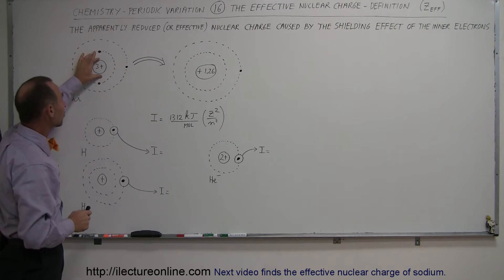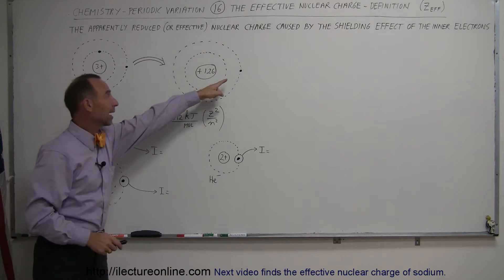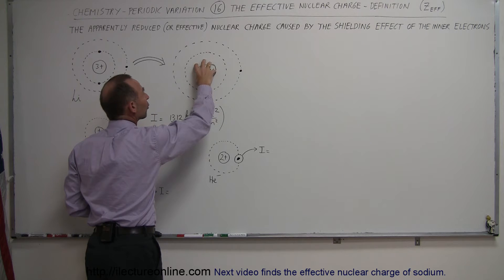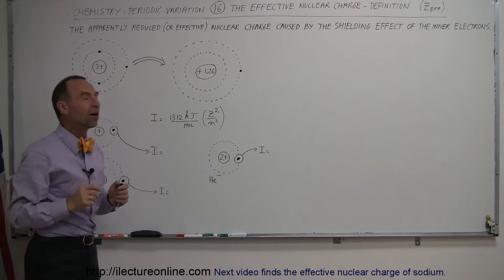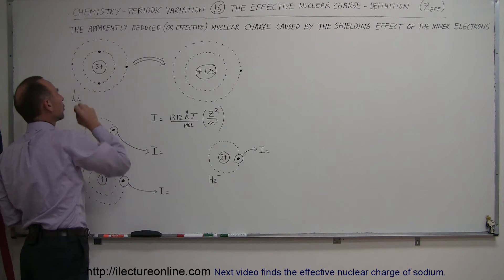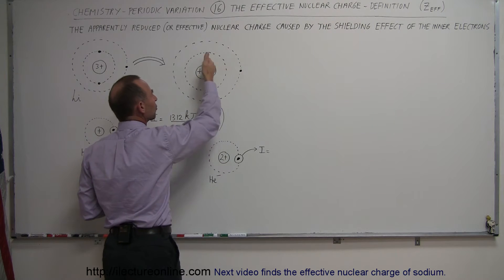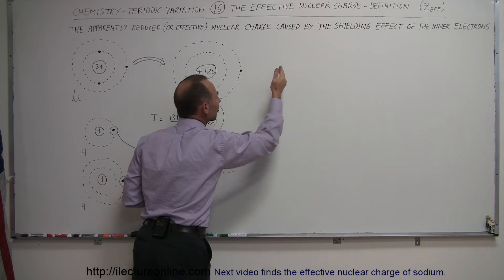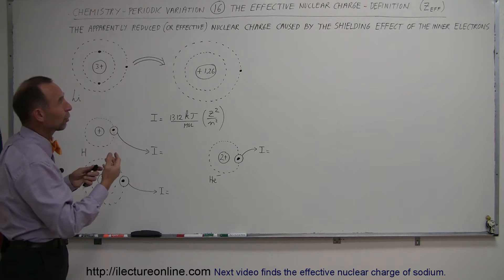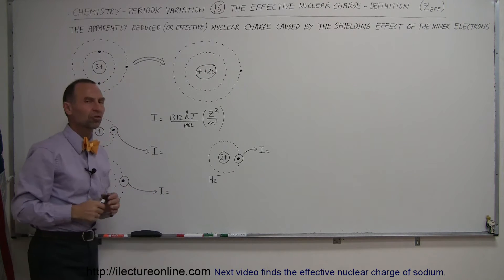So even though there are actually three protons and the actual charge on the nucleus is +3, the outer electron — if you were to assume the inner electrons weren't there — feels an effective force of only 1.26 positive charges. The attractive force is far less than it would be for the full three charges, so the electron sits much farther from the nucleus, feeling an effective or apparent attractive force of 1.26 charges.